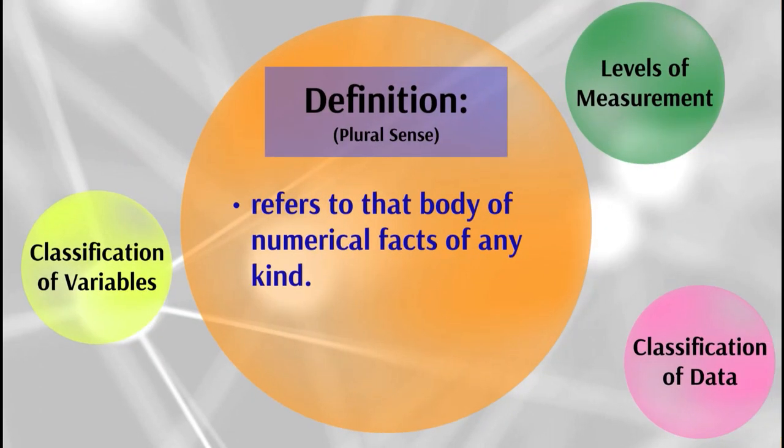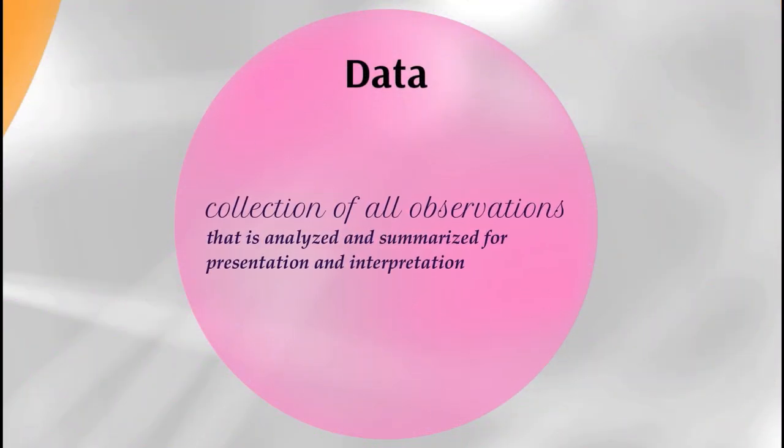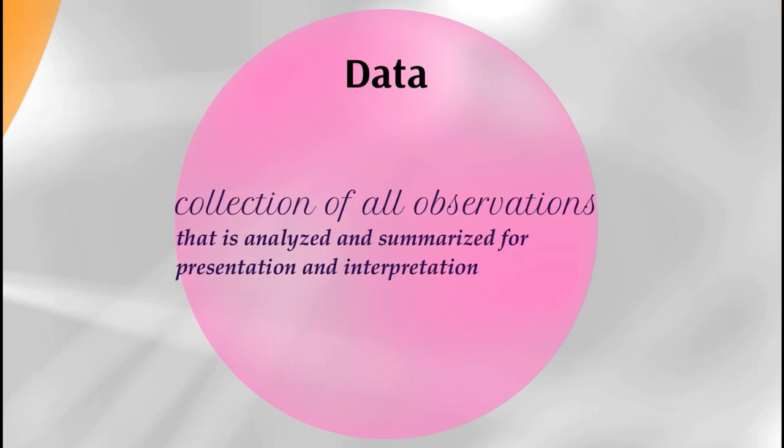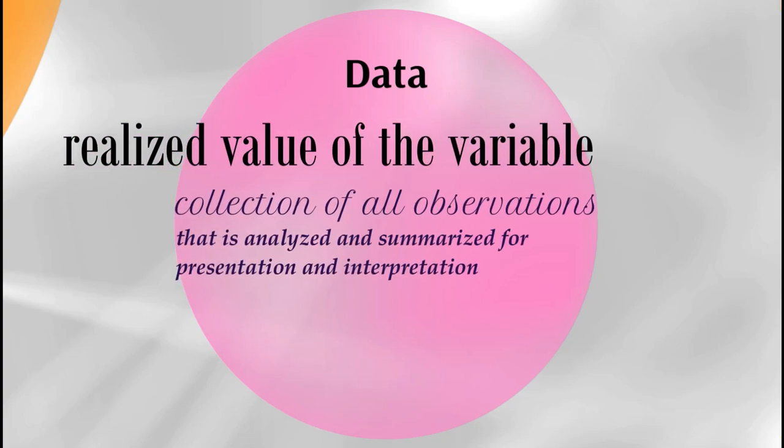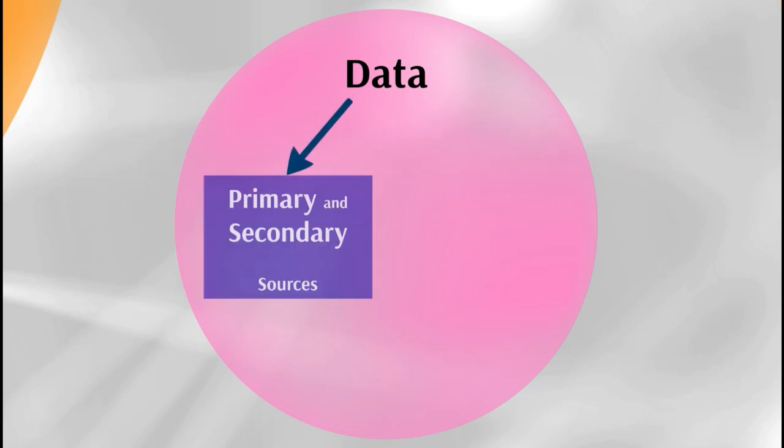The last branch under the set of data is the classification of data. In layman's term, data is simply the collection of all observations. When we say observation, we mean the realized value of the variable under which we have primary and secondary sources as well as external and internal information.